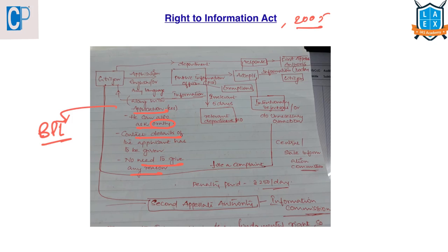It is the duty of every department head to constitute a Public Information Officer (PIO) to provide information. Once a citizen seeks information, the PIO must process the application and provide the information within a maximum period of 30 days.